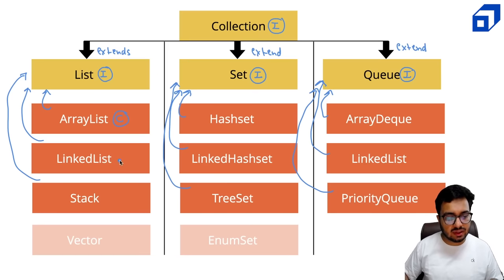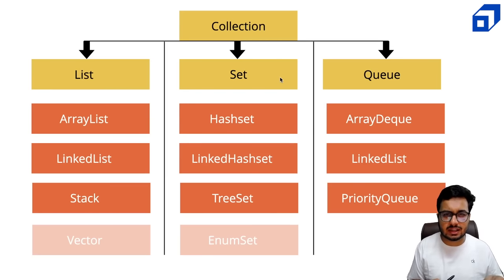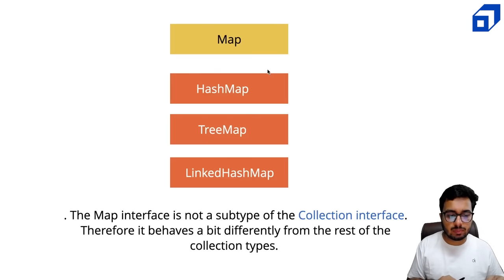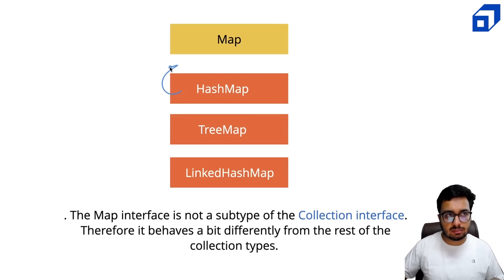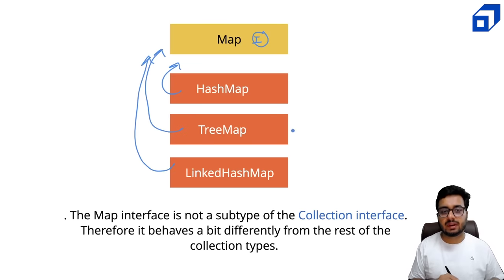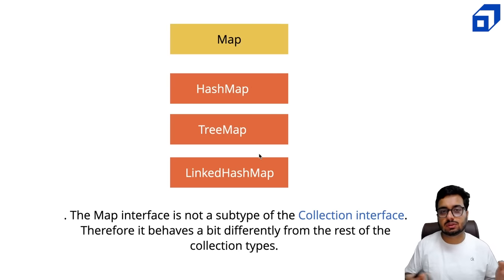You might be wondering where HashMap is. HashMap is not part of the Collection interface — it has been kept separately and behaves differently from other collection types. Map is a separate interface, and HashMap, TreeMap, and LinkedHashMap are implementations of the Map interface. We will use one of these implementations when we want to build something that stores key-value pairs. We will understand the differences between these implementations as we go through this tutorial.